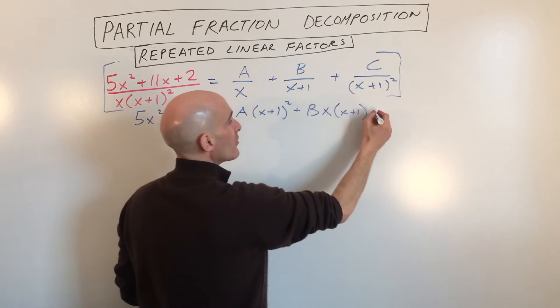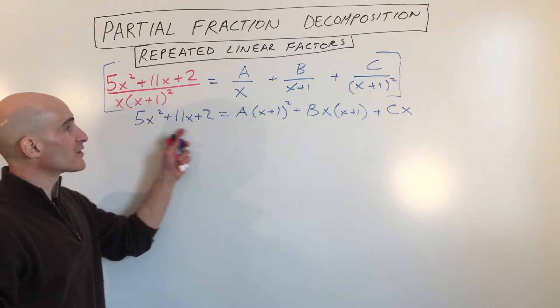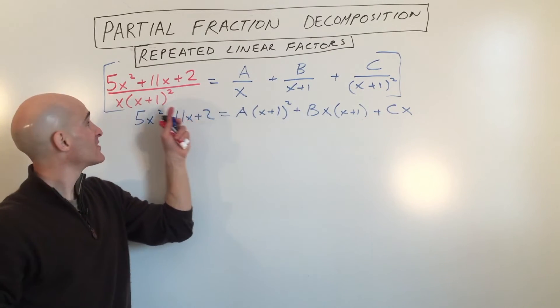And then the third one, when we multiply, we're going to be left with C times x. So we've cleared the denominators by multiplying through by this common denominator.